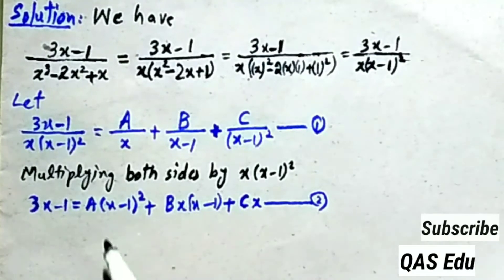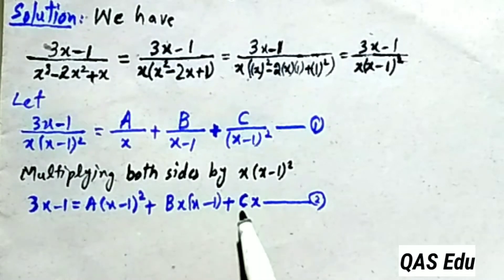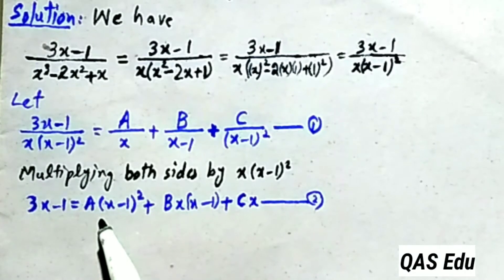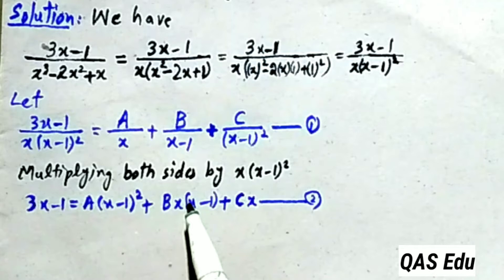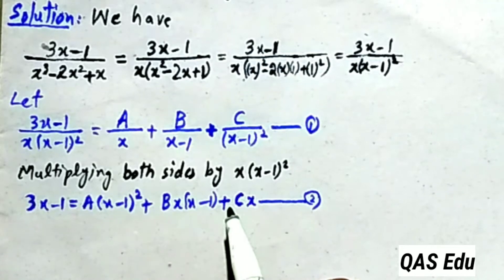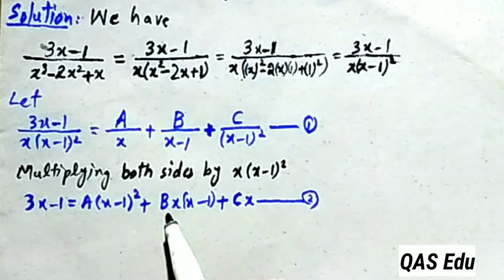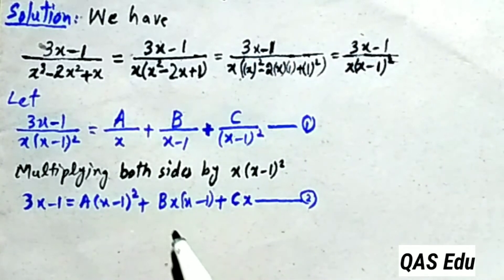From equation number 2, putting x = 0, the terms with x will cancel. This gives us the value of A. Then putting x = 1, the remaining terms cancel and we find the value of C.